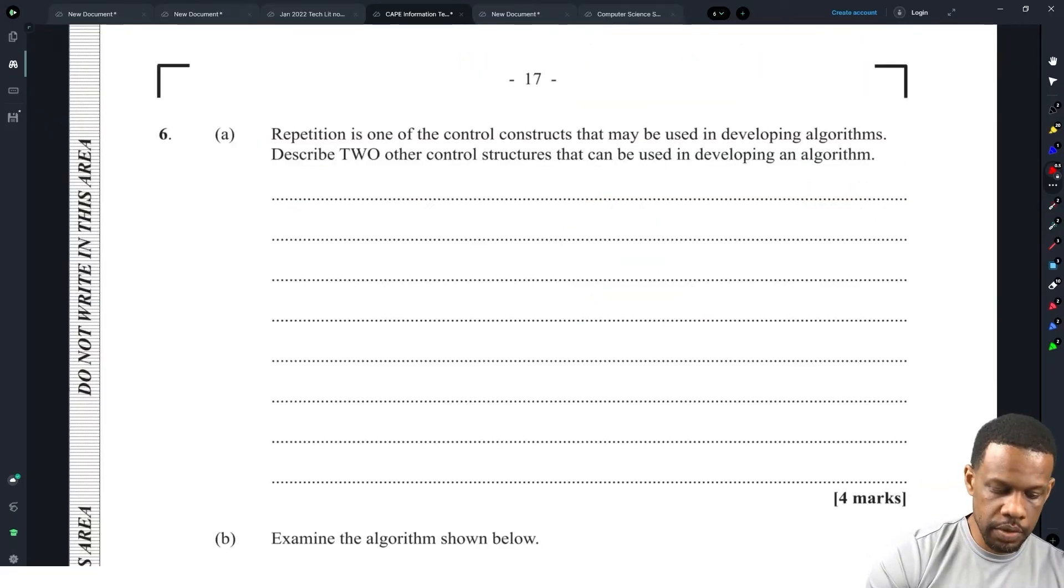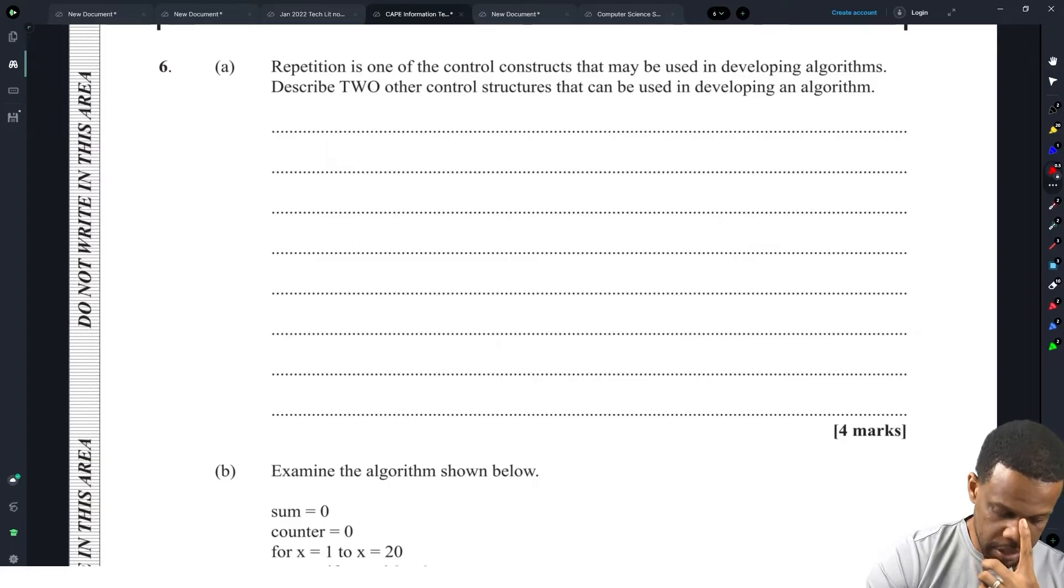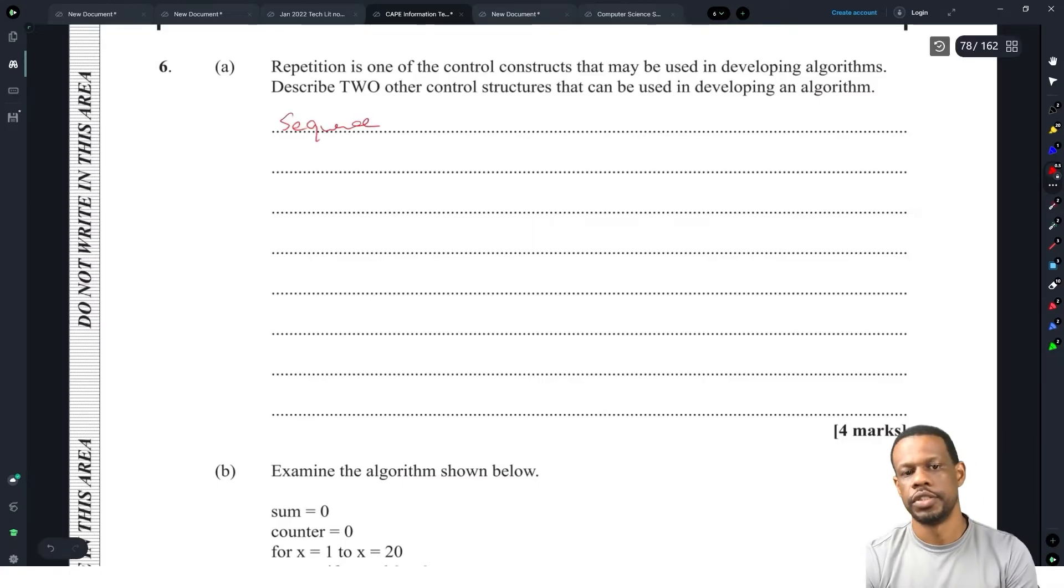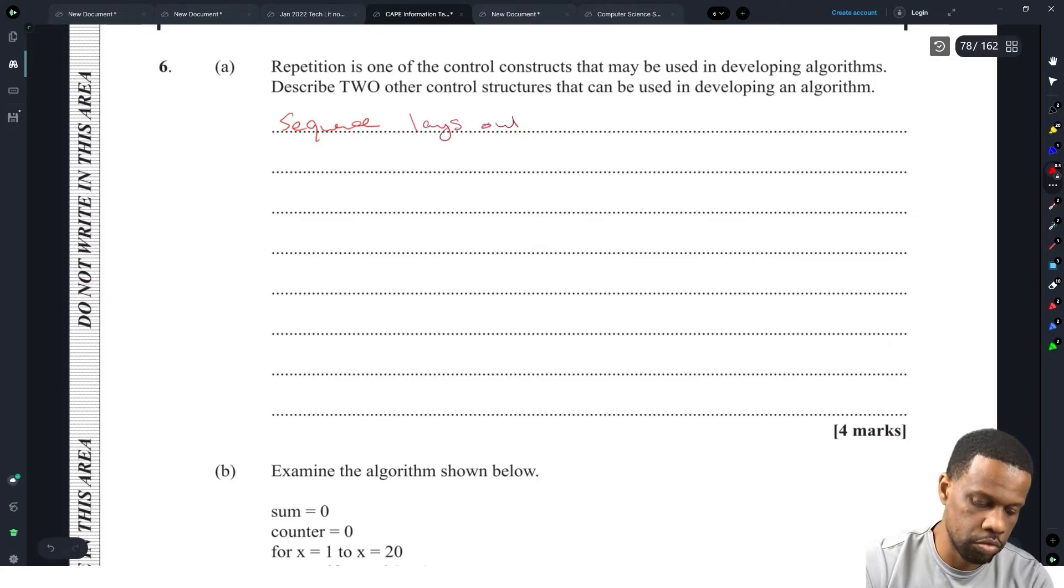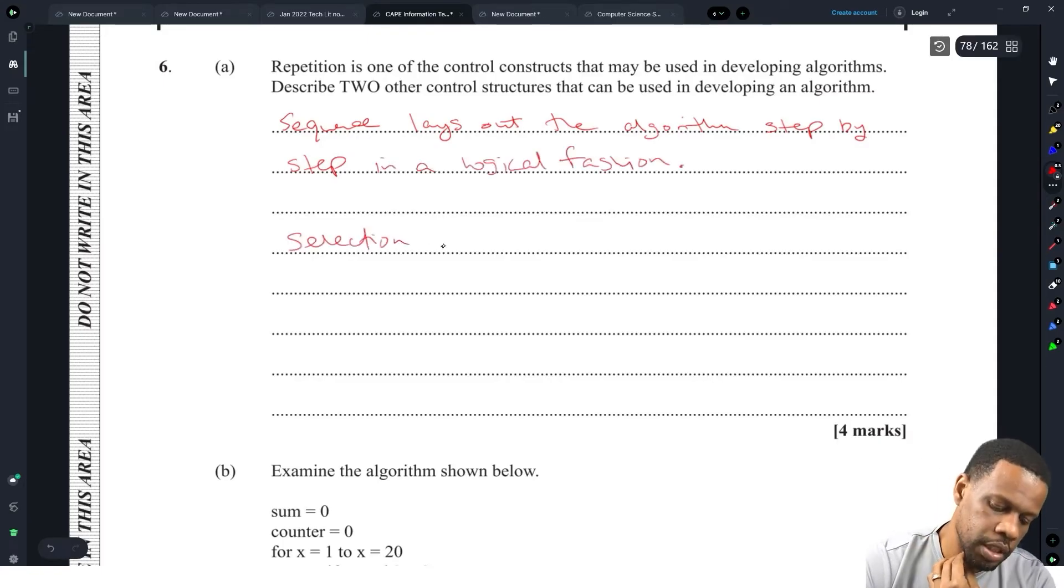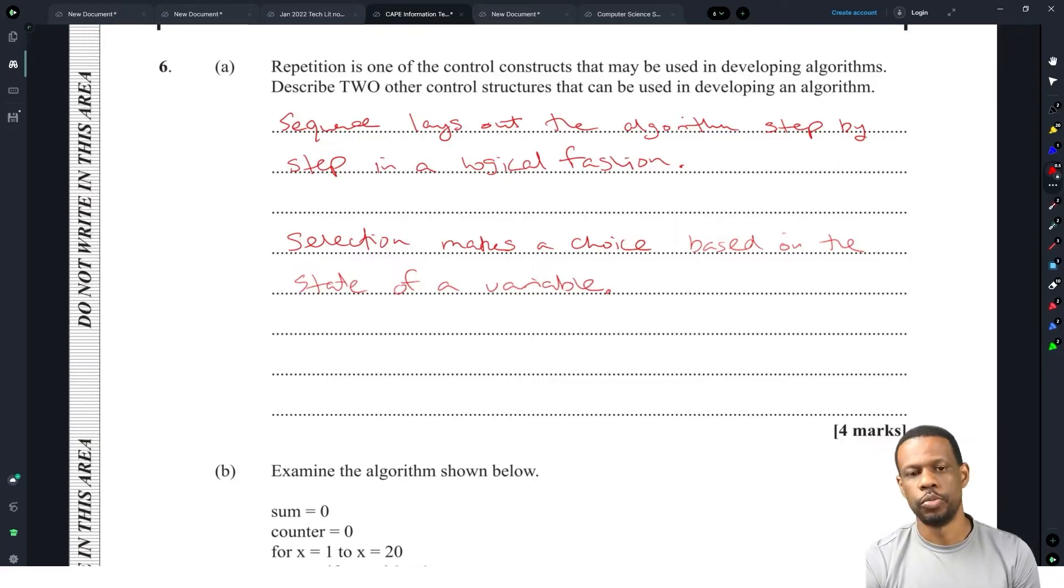Repetition is one of the control constructs that may be used in the development of an algorithm. Describe two other control structures that can be used. Sequence lays out the algorithm step by step in a logical fashion. And then there's selection, which makes a choice based on the state of a variable. Sequence, selection and looping are the three control structures.